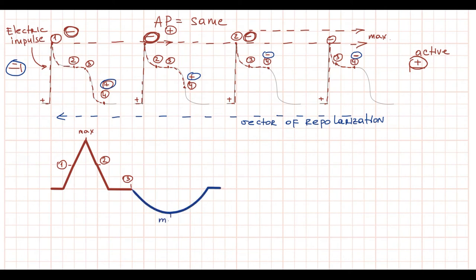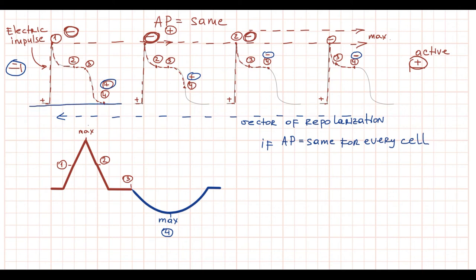The depression is maximal when the second cell repolarizes, and when all cells repolarize, there will be an isoelectric line. So we see that if the duration of action potentials is the same for every cell, repolarization begins from the cell that depolarized first, because that cell reaches the final rapid repolarization phase earlier than other cells. This principle works only if all cells have the same duration of action potential.